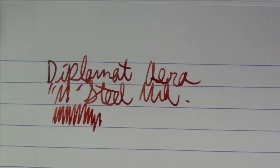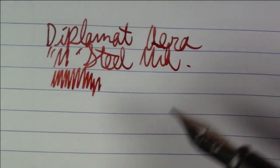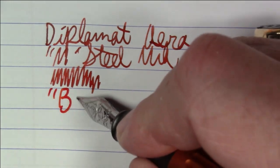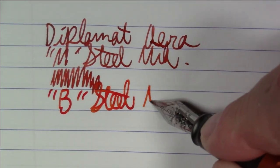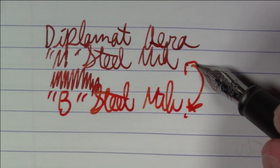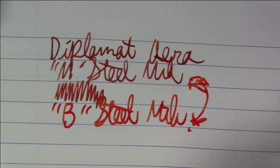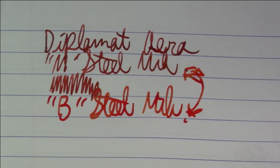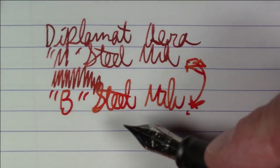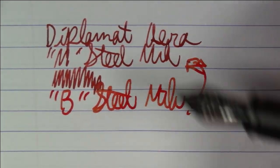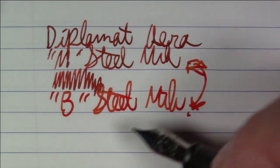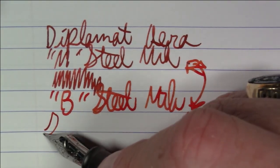Now this medium steel nib is a bit on the fine side for medium. Just to give you some contrast, here's the other Diplomat Aero that I have. This one's in a broad and you see this does a very big jump between the medium and the broad. This to me looks like more than one size jump. I think the medium is a tiny bit fine for medium, but you know I'm not really going to quibble. German nibs tend to run a bit on the wider side, but apparently not these.